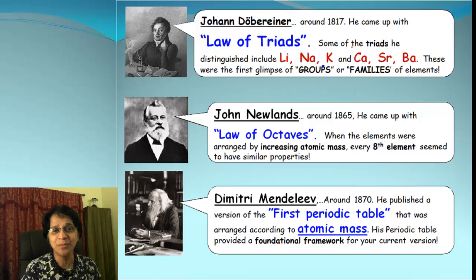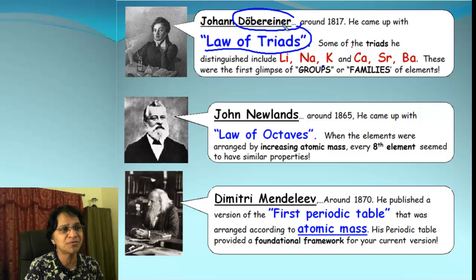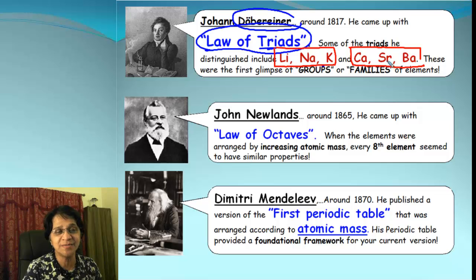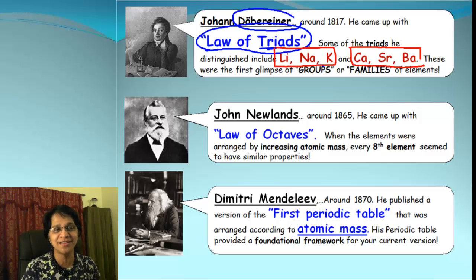So who were the scientists who put in the hard work? First of all, the first scientist was Dobereiner, who gave serious thought about putting elements together. He came up with the law of triads — tri means three. He put three elements together in a group. The first group was lithium, sodium, and potassium. The second group was calcium, strontium, and barium. They definitely have similar properties. If you look at today's modern periodic table, you will still find those elements together. So Dobereiner definitely had a great vision.